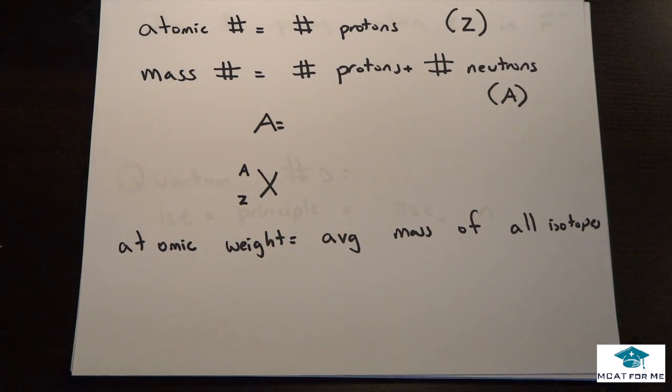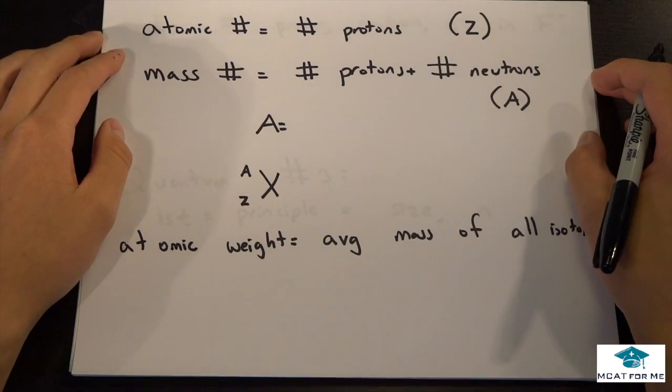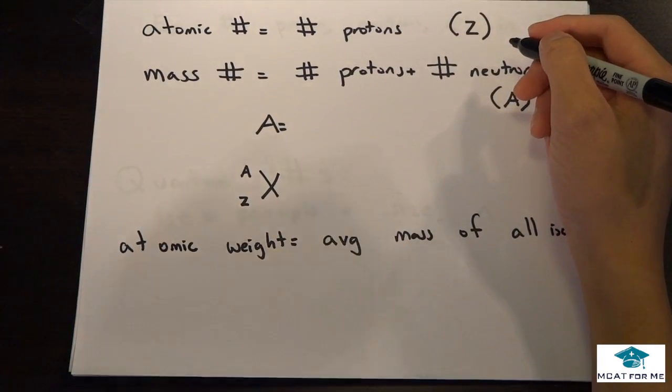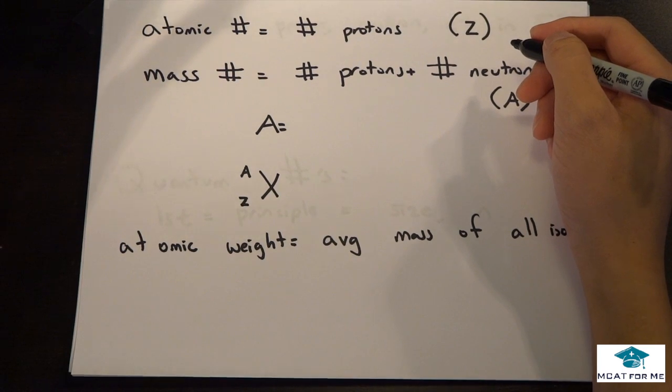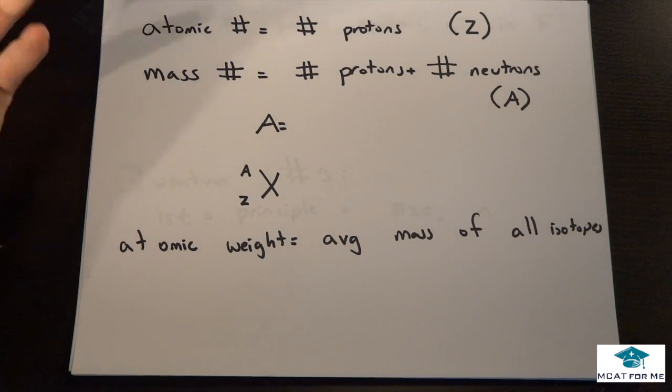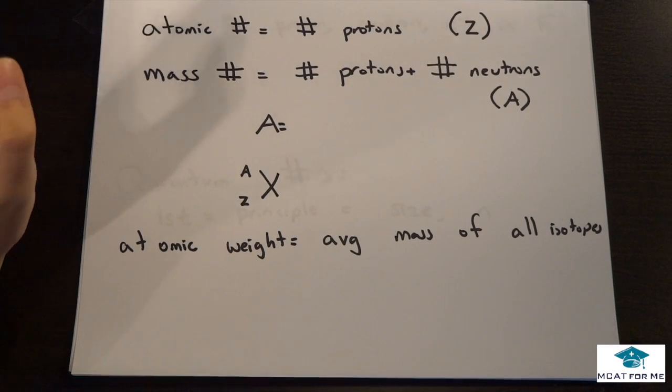Next we're talking about basic definitions on atomic number, mass number, and atomic weight. Atomic number is the number of protons, which gives you the actual molecule. For example, carbon has six protons, which defines it as carbon.